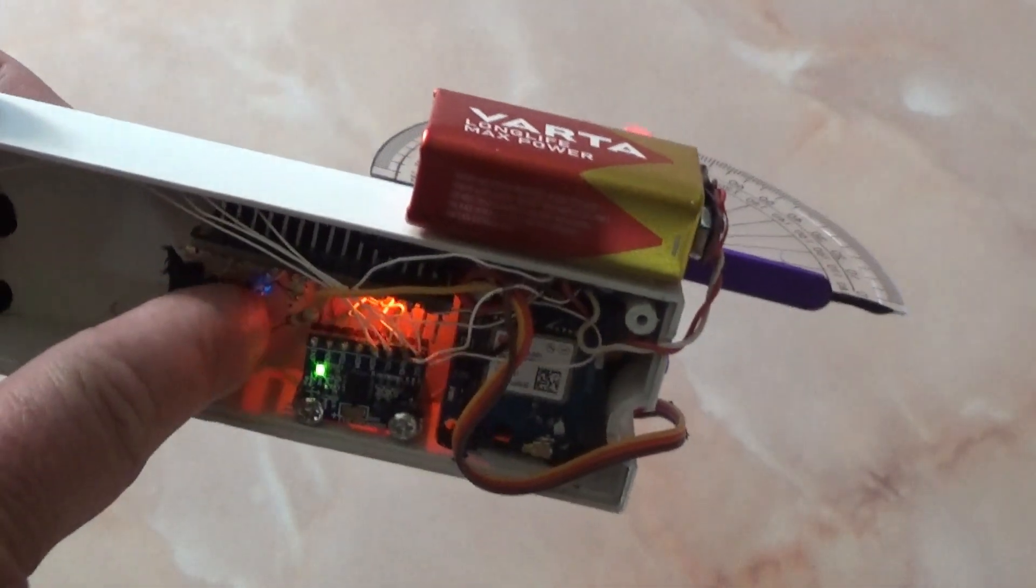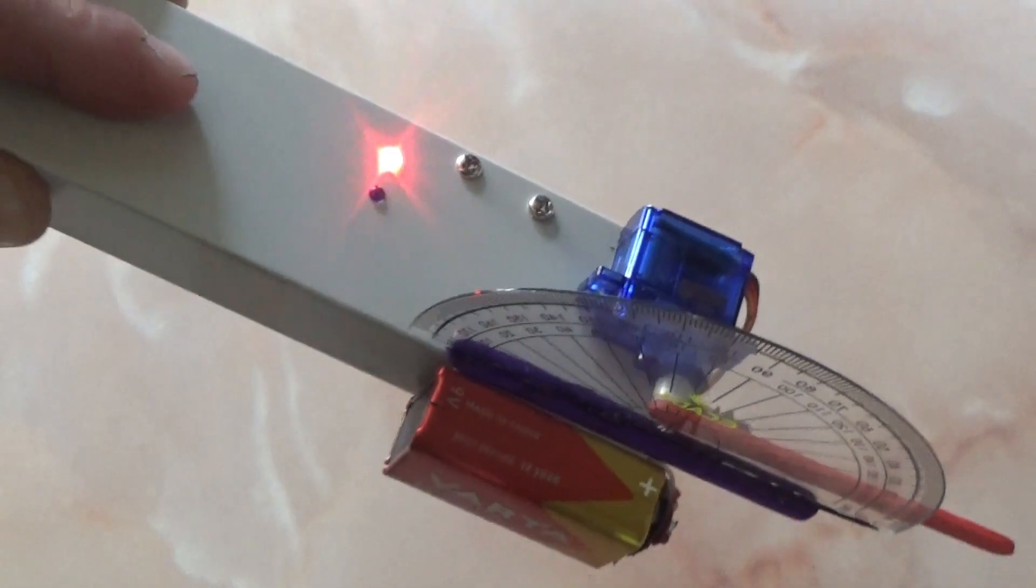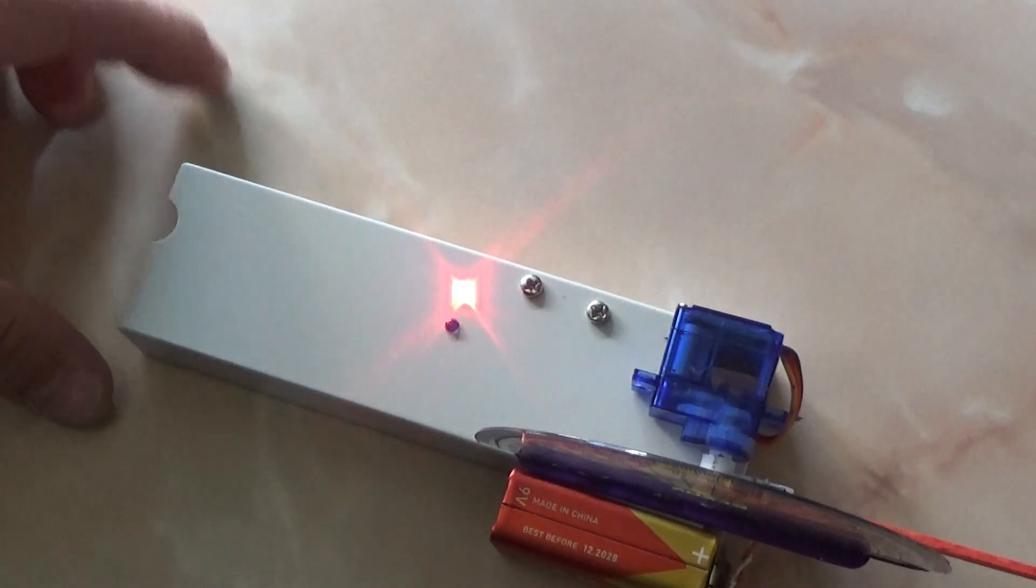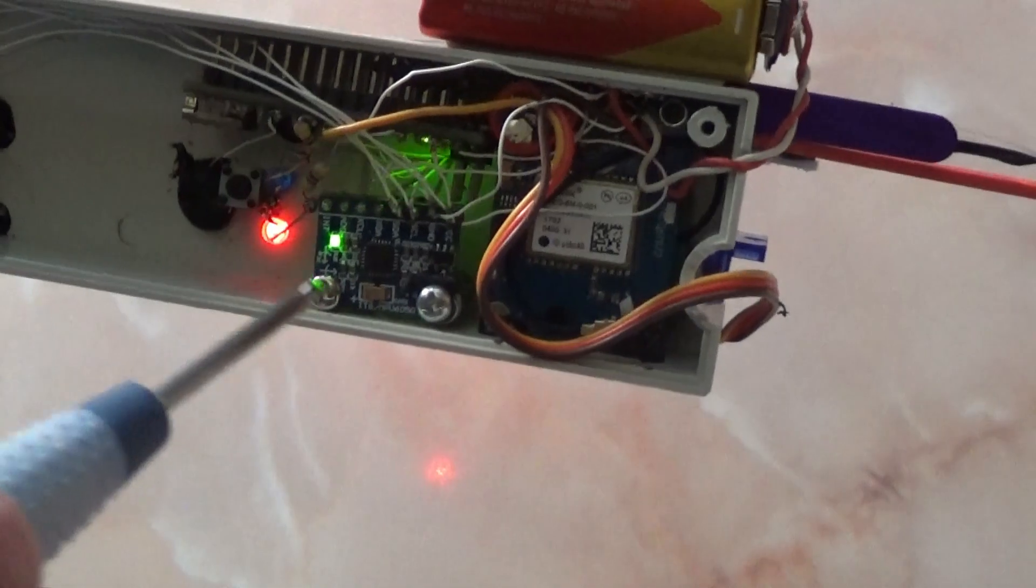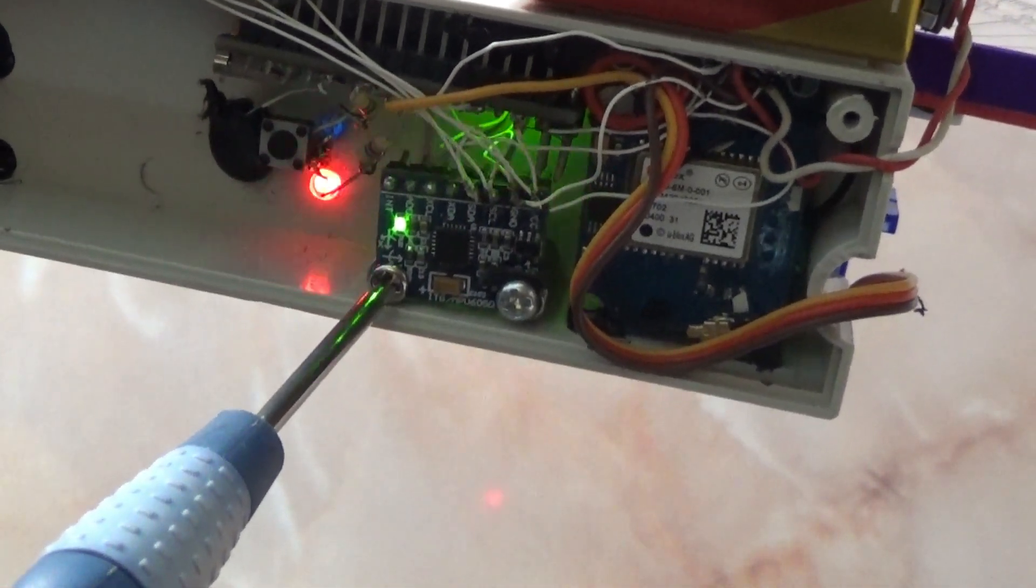Press the button again. The device goes into accelerometer calibration mode. Position the device parallel to the surface of the earth. Adjust the position of the MPU 6050 accelerometer module until the red LED stops flashing and stays on permanently.